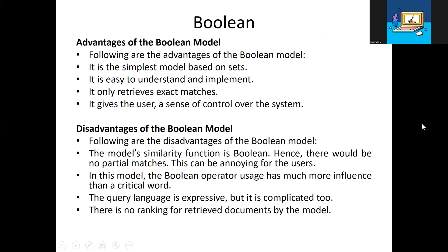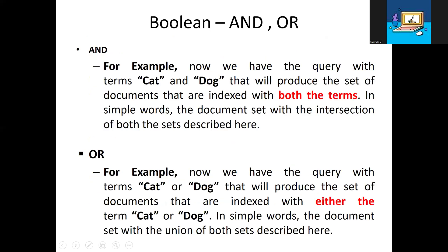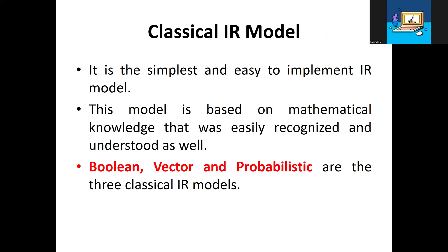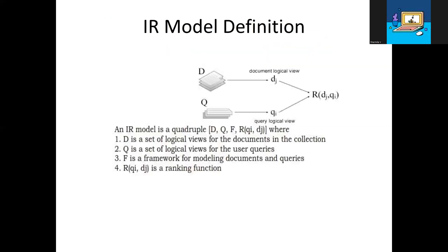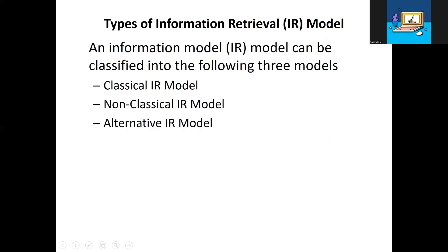In this video, we discussed three types of models: classical IR model, non-classical IR model, and alternative model. As a classical example, we examined the Boolean model. We covered the IR model definition with four components: D (documents), Q (queries), F (framework), and R (ranking function). I hope you understand these four quadruples and the classical model. In the next video, we will discuss the non-classical model. Thank you.